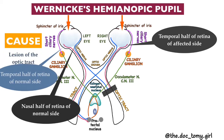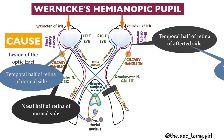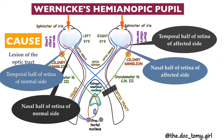On the other hand, both the ipsilateral direct light reflex and the contralateral consensual light reflex will be present when the light is thrown on the nasal half of the affected side and the temporal half of the opposite side. The reason is that the fibers in these halves of the retina are able to complete the whole pathway in order to bring about the effect of the light reflex.